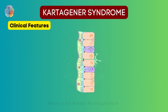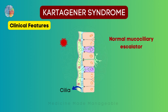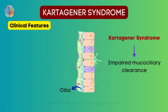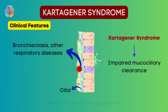Let's understand this with an animation. These are the cilia, and they form what is called the mucociliary escalator. Normally, when a pathogen comes and sticks to the cilia, the cilia will beat in a rhythmic and coordinated fashion and push the pathogen or any particle towards the pharynx, so it will be pushed up and finally thrown out of the body. Now in Kartagener syndrome, there is impaired mucociliary clearance because the cilia are not moving. So when a pathogen comes and sticks to the cilia, it will not be cleared, will stay there, multiply, and can lead to diseases like bronchiectasis and other respiratory diseases.